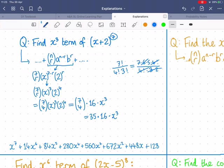35 times 16 times x cubed, and that's going to equal 560 x cubed. And you may have seen below already, I've written out the full expansion, although we don't have to in this question at all.